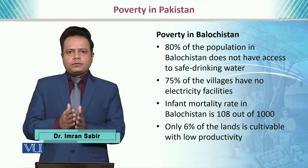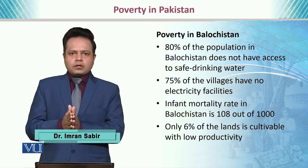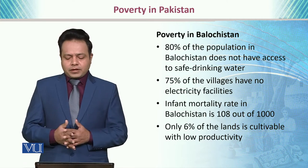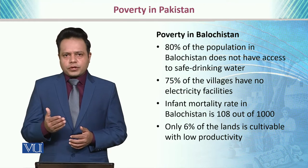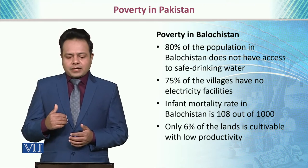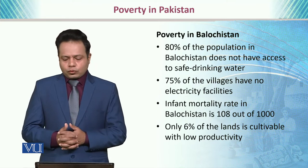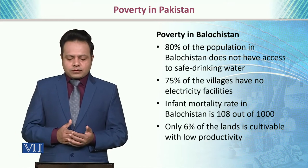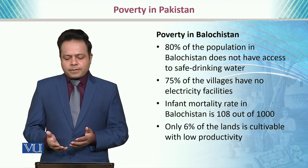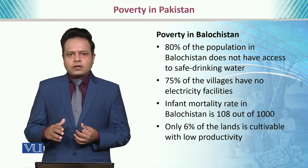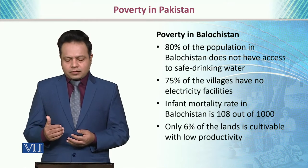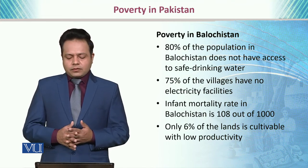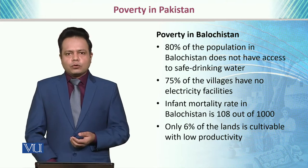If we talk about the distribution of poverty across all provinces, starting with Balochistan — it has the highest population living below the poverty line. 80% of the total population of Balochistan does not have access to safe drinking water, 75% of villages have no electricity, and the infant mortality rate is one of the highest at 108 children per 1,000. Only 6% of land is cultivable with low productivity.